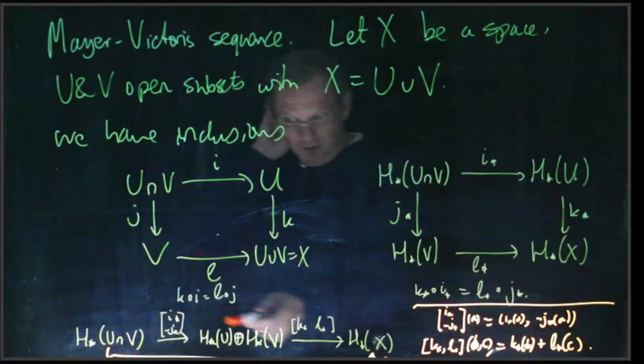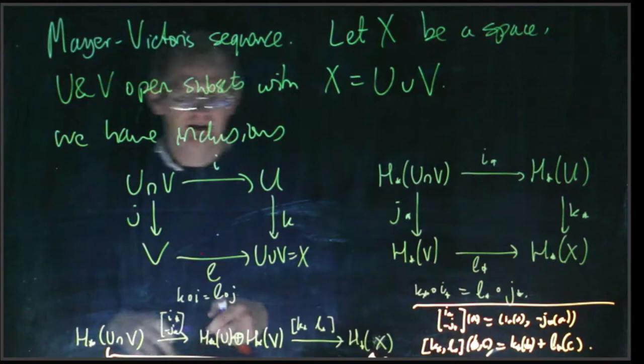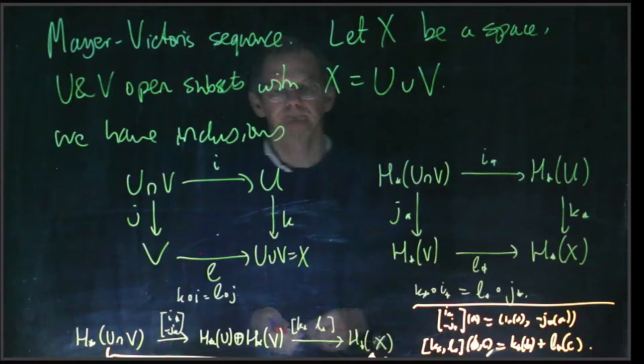To say that this composite is zero homomorphism, as we've discussed in the context of exactness, means that the image of this first map is contained in the kernel of the second one.